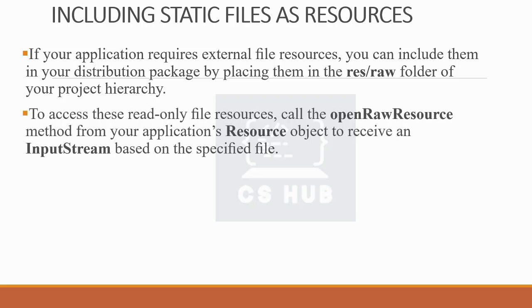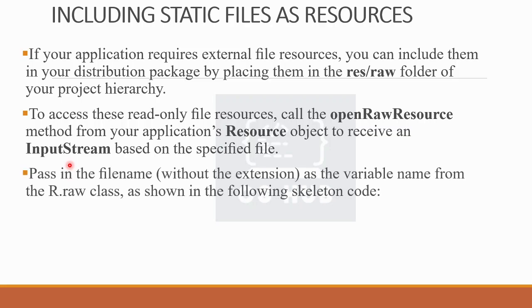To access these read-only file resources, call the openRawResource method from your application's resource object. This receives an input stream based on the specified file. You pass in the file name as the variable name from the R.raw class.